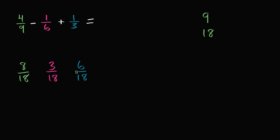And I've rewritten them in the corresponding color. So this up here is the exact same thing as 8/18 minus 3/18 plus 6/18. So what is this going to be equal to? It's going to be a certain number of 18ths. And so if I have 8/18 minus 3/18, that's going to be 5/18, plus 6/18 is going to be 11/18. And we are done.